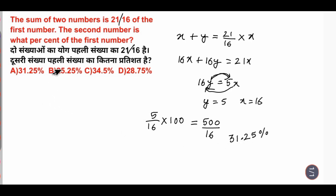So which option will be 31.25 percent? Option number A.